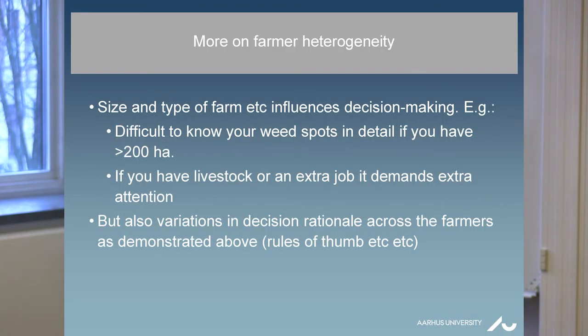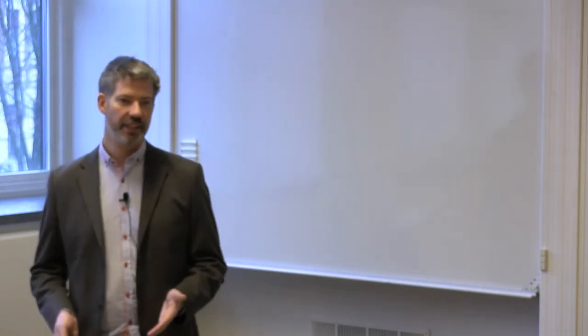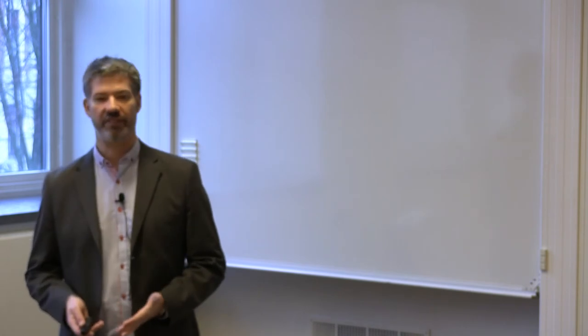Size and type of farm also influences decision making. What we could see was that the larger farms were less inclined to reduce pesticides. And one explanation for that could be that it's difficult to know your weed spots in the field if you have more than 200 hectares. If you have a farm of only 50 hectares, there's a tendency that you better know your field and know where the weed spots are in that field. But when the area grows, you lose that. And therefore, you will probably more have a tendency just to use the same amount of pesticides all over the field because you don't know all the spots.